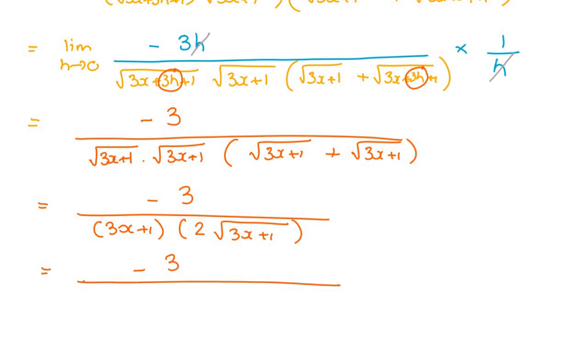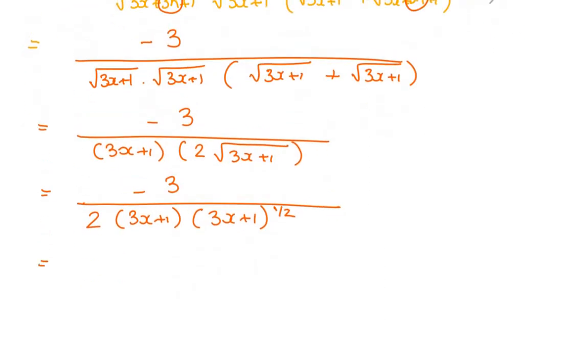Now I've taken the limit, so it's negative 3 over root 3x plus 1 times root 3x plus 1 times 2 root 3x plus 1. This is negative 3 over 3x plus 1 times 2 root 3x plus 1. Now if I put the 2 out first, technically this is 3x plus 1 to the power of a half. When you multiply past the same base, you add exponents. So this actually becomes 3x plus 1 to the 3 over 2.